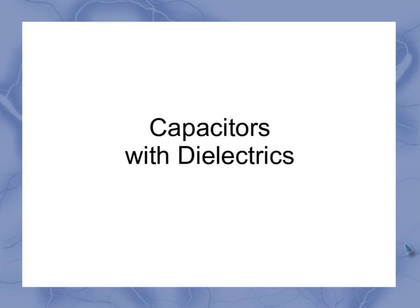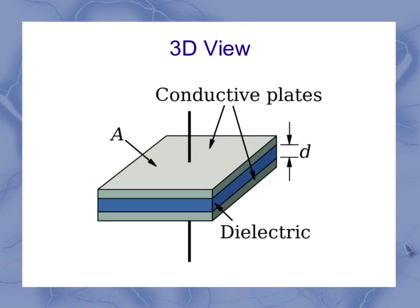Now we can look at a capacitor with a dielectric. So let's refresh our memory on what a capacitor looked like in a 3D view. And here we have our diagram labeling some of the pertinent features of it.